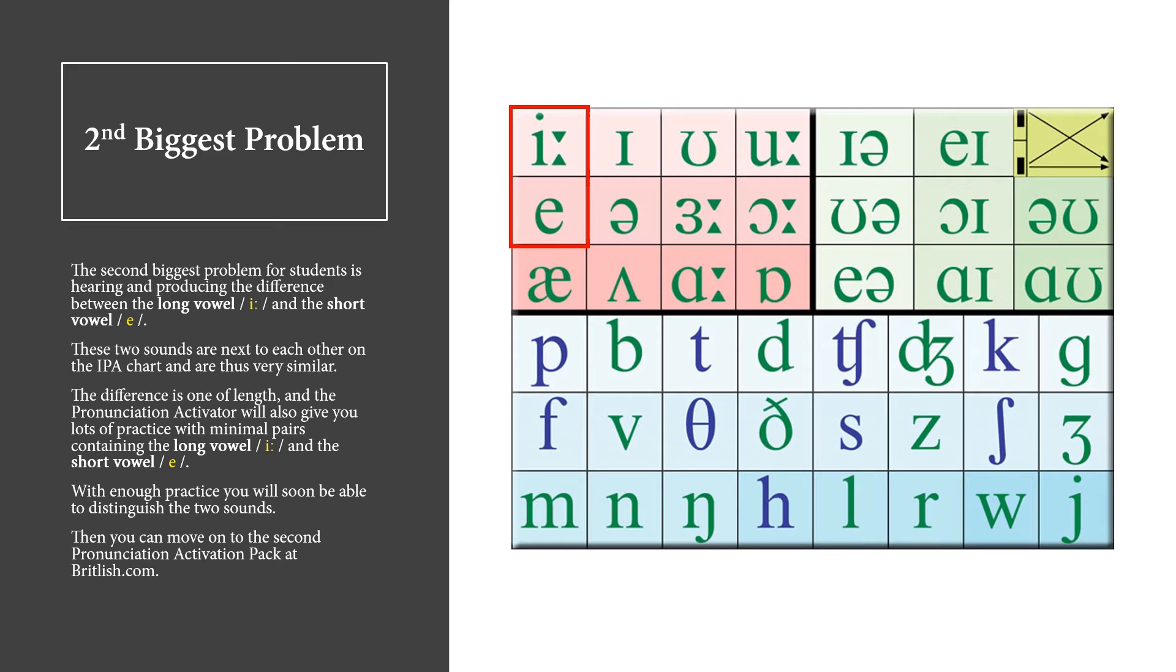The second biggest problem for students is hearing and producing the difference between the long vowel E and the short vowel E. These two sounds are next to each other on the IPA chart and are thus very similar. The difference is one of length, and the pronunciation activator will also give you lots of practice with minimal pairs containing the long vowel E and the short vowel E.